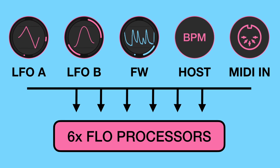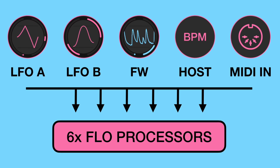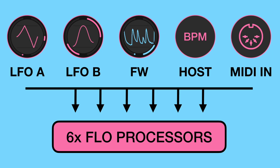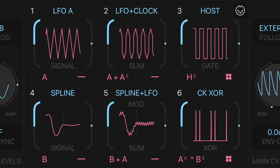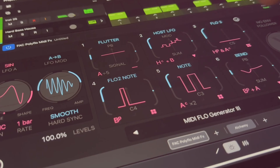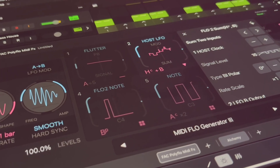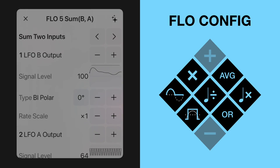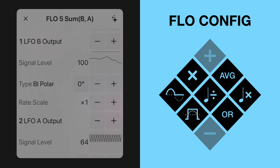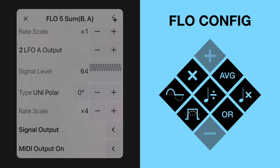Along with these generated source signals, the host clock and the MIDI inputs are fed into six independent flow processors. These processors shape the inputs with mathematical operations, conditional logic, comparators, and modifiers.